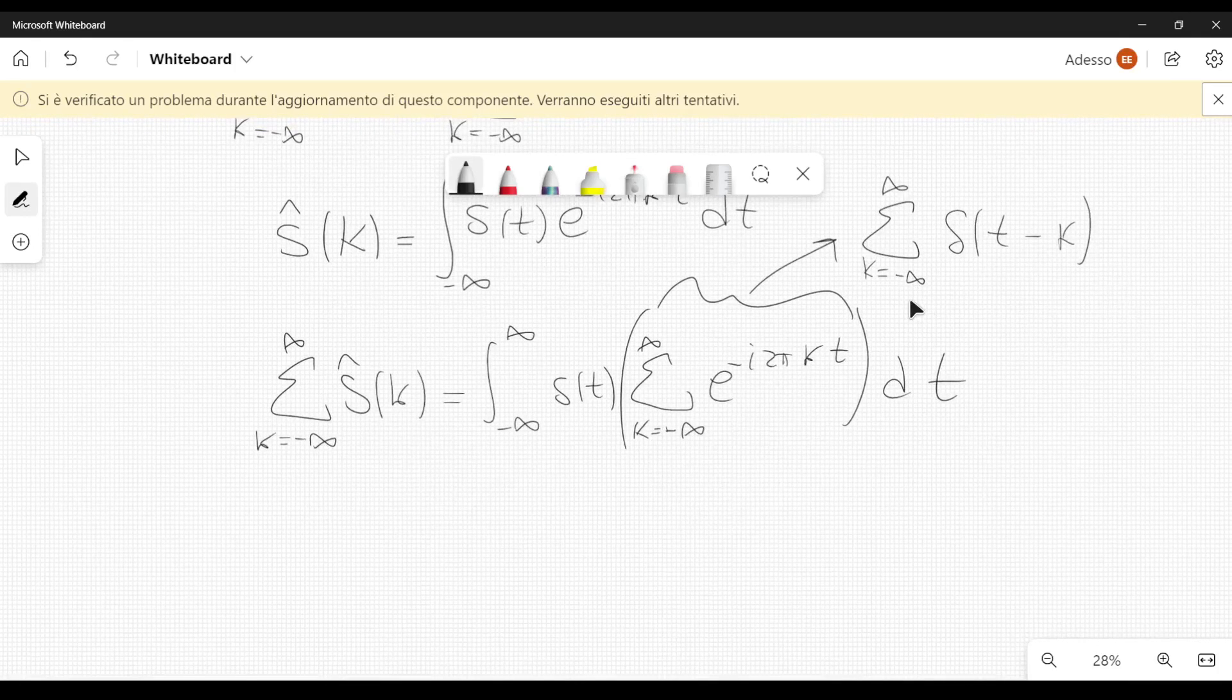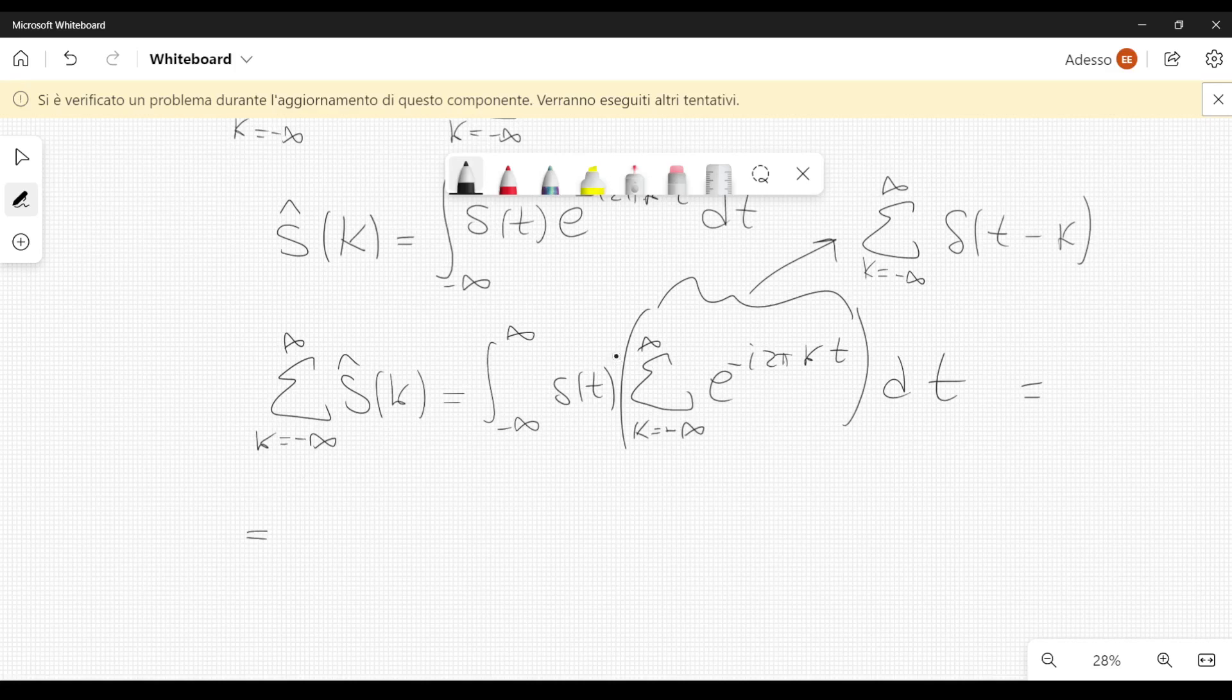And after we do that, now it becomes very simple, because we can rewrite everything like this. Now we can see that S of t is multiplied by this train of impulses, so this Dirac deltas.